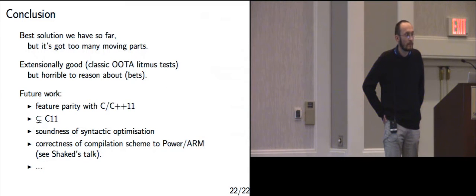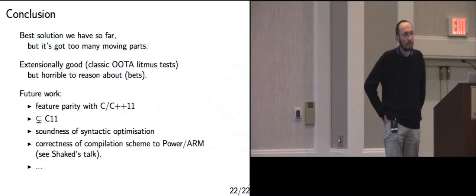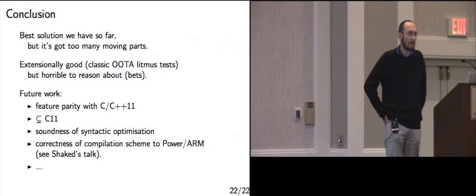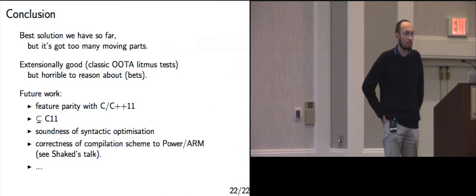Question: you have several steps of deordering, bets, and other things to relax behaviors. Is it clear that none of those could be expressed as a sequence of other steps — do you have the minimal set? Answer: there's some amount of overlap between the steps, but I haven't tried to build a minimal thing in any way. They seem to cater for different aspects of what hardware and compilers do.